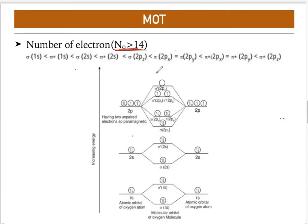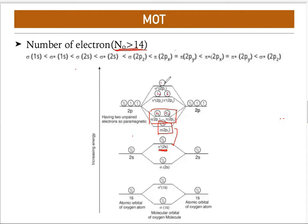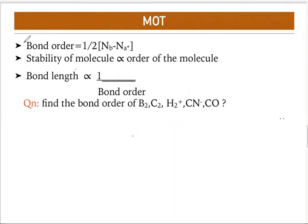For molecules with more than 14 electrons, there is one key difference: after σ2s, σ2pz comes first, and then π2px and π2py follow. That is the only change in the sequence. Using the correct sequence, fill electrons one by one: 1, 2, 3 ... up to 20, following Aufbau, Hund's, and Pauli rules.